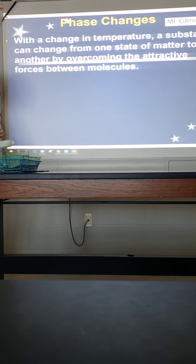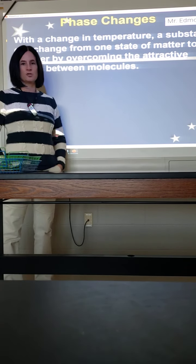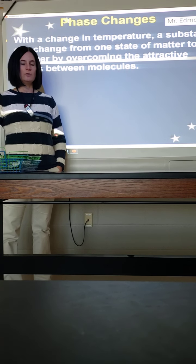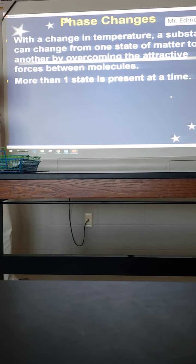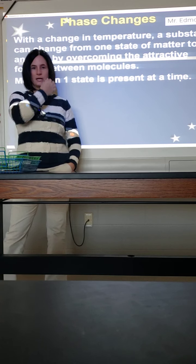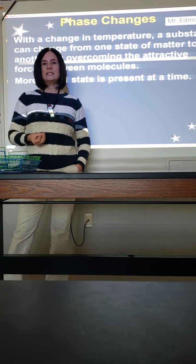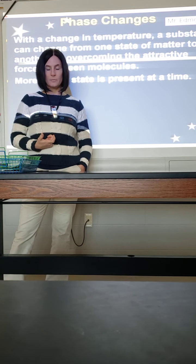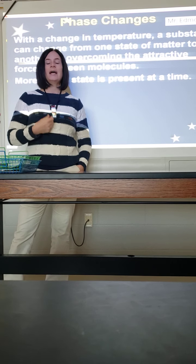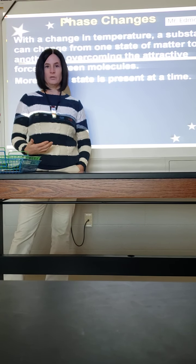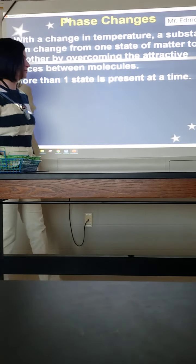With a change in temperature, a substance can change from one state to another. The reason this happens is because you overcome the attraction between the molecules, or you increase the attraction between the molecules, depending on which direction you're going. You're also going to have more than one state of matter present at a time — you don't instantly take a solid ice cube and have it all turn to liquid. There's going to be a time where you have some solid and some liquid, until all of the solid finally melts.